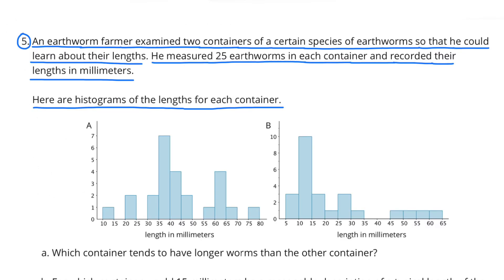Number 5. An earthworm farmer examined 2 containers of a certain species of earthworms so that he could learn about their lengths. He measured 25 earthworms in each container and recorded their lengths in millimeters. Here are the histograms of the lengths for each container.